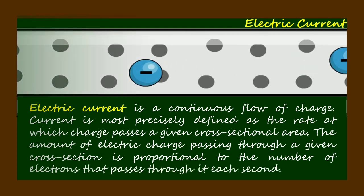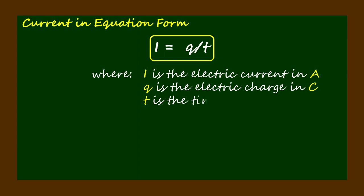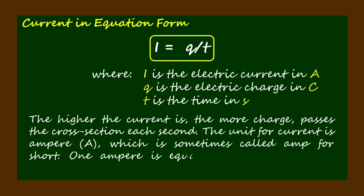Current can be defined mathematically in equation form: I = q/t, where I is the electric current in ampere, q is the electric charge in coulomb, and t is the time in second. The higher the current, the more charge passes the cross-section each second. The unit for current is ampere, which is sometimes called amp for short. One ampere equals one coulomb per second. Current is measured by a device called ammeter.